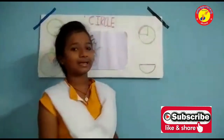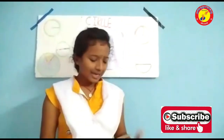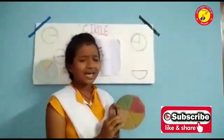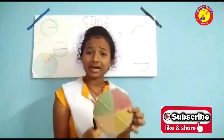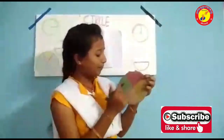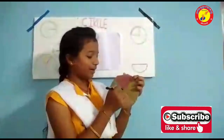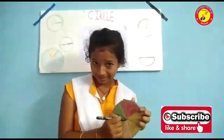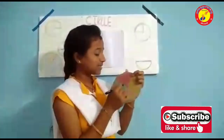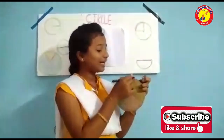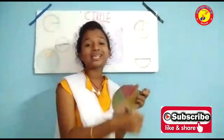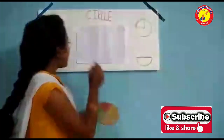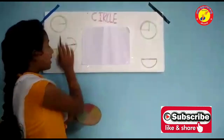Today I want to give a small introduction about Sarkin. A Sarkin is a simple closed curve. The point in the middle of the circle is known as the center. The distance from the center to any point on the circle is known as the radius.